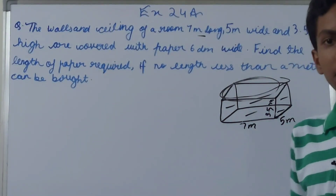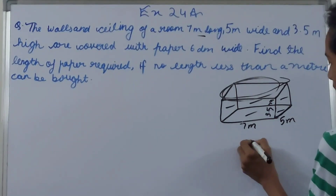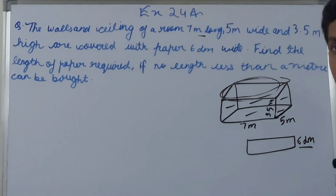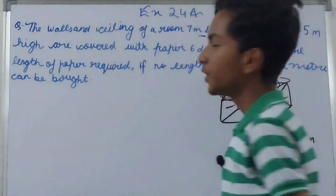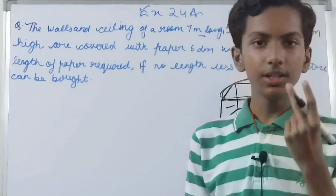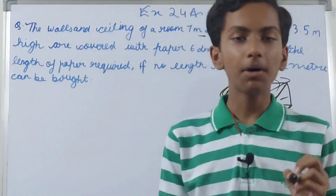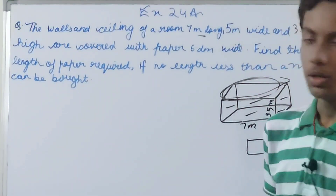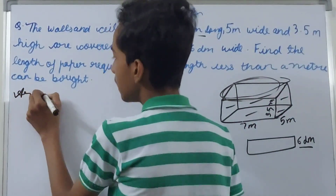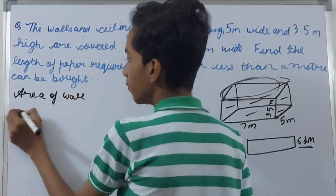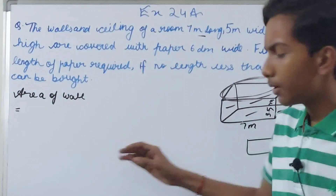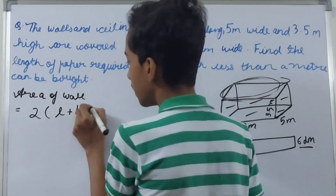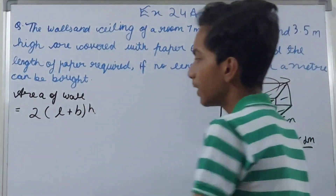We have a roll of paper whose width is six decimeters. First, we are going to add the area of all four walls and the ceiling together, because we need the total area to find the length of the paper. The formula for the area of the four walls is 2 × (l + b) × h.